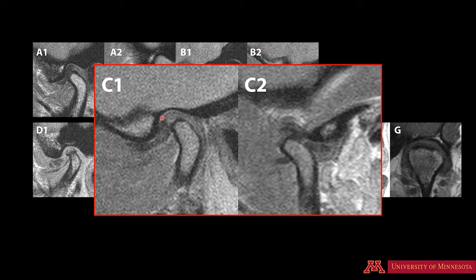In this case, the condylar head, articular fossa, eminence. This is the posterior band of the disc, central zone, anterior band — we'll call this anteriorly displaced disc. The same patient, when the mouth opens, the central zone is in contact with the condylar head. So this is anteriorly displaced disc with reduction.